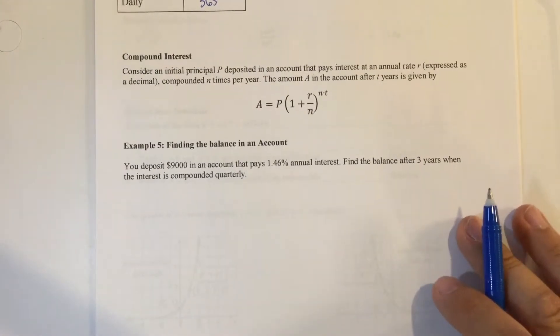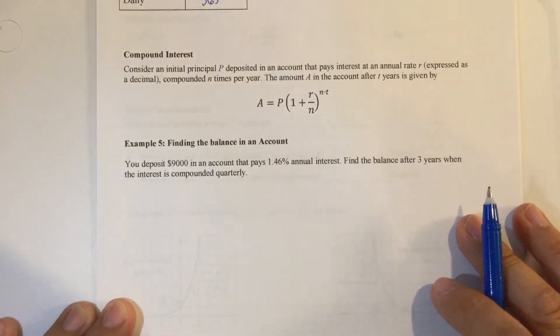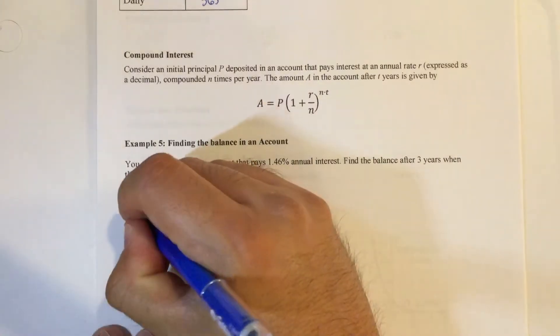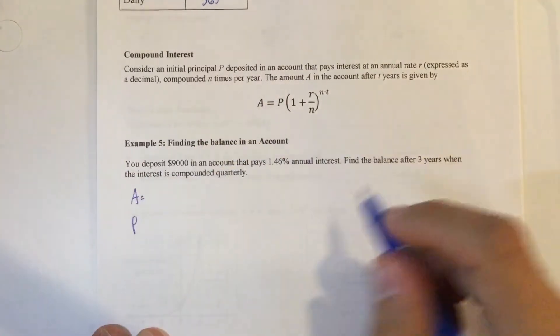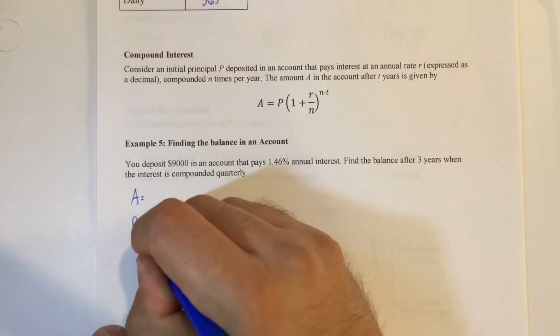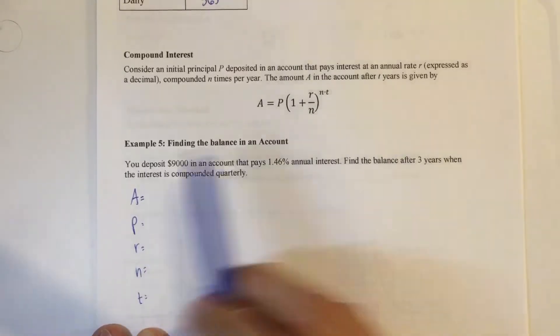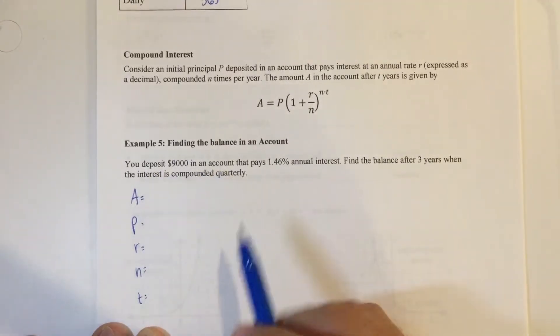Okay, let's read through this problem here and see if we can figure things out. I'm going to write these letters out. It's not necessary to do this, but I'm just showing you how I identify things. You deposit $9,000 in an account.